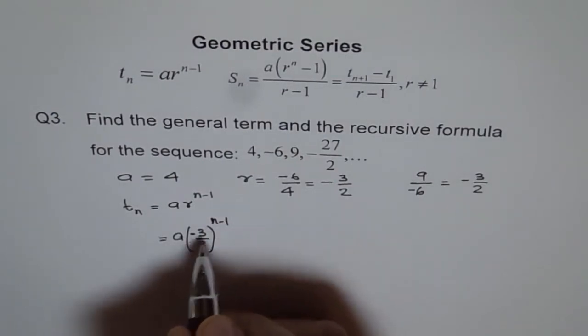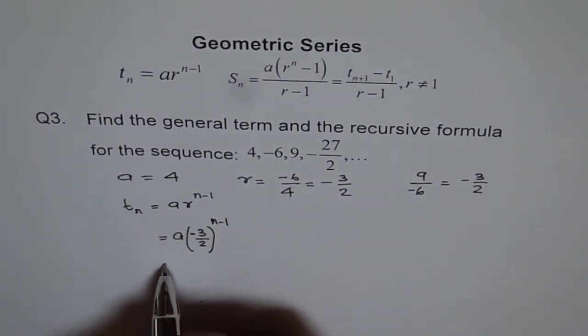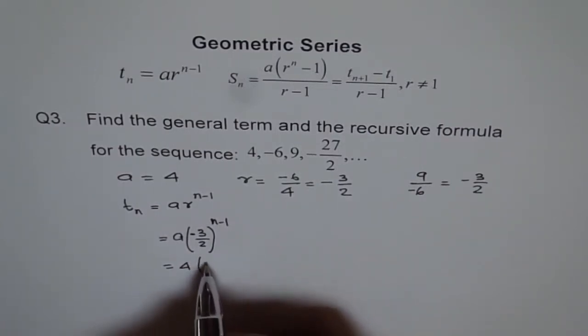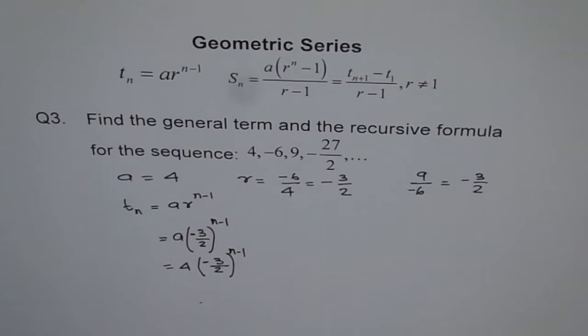So that becomes... okay, A is 4, I should have written 4 here. Let me write now. So we get 4 with in bracket minus 3 over 2 to the power of N minus 1. So that becomes our general term for this geometric sequence. To find the recursive formula,